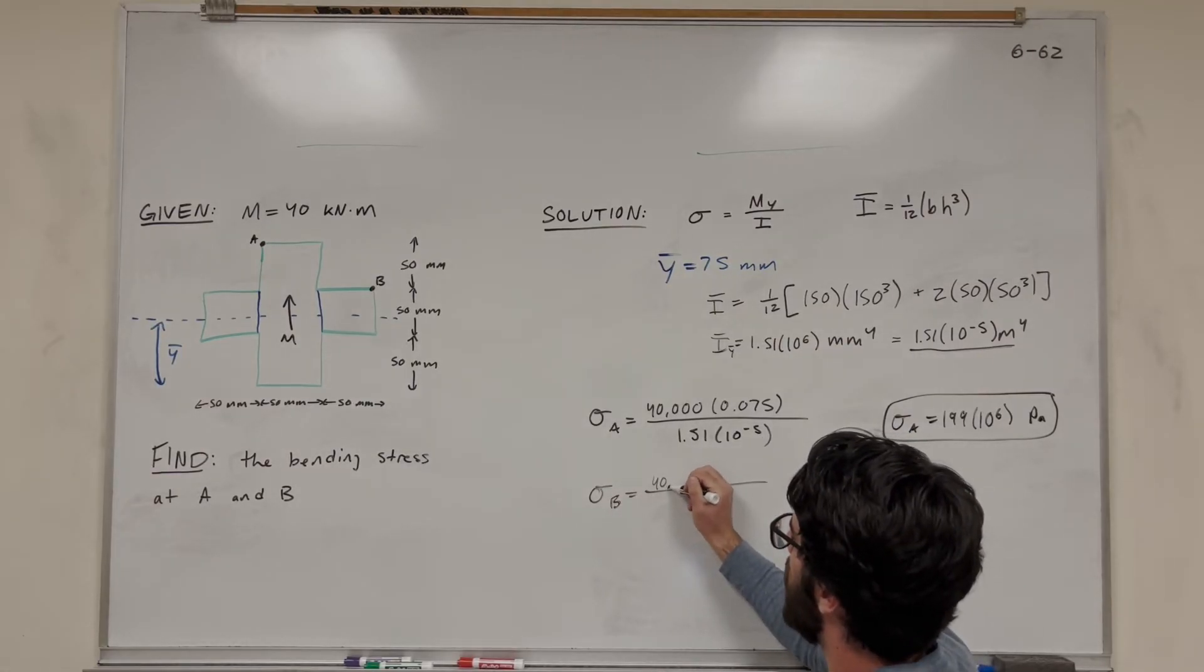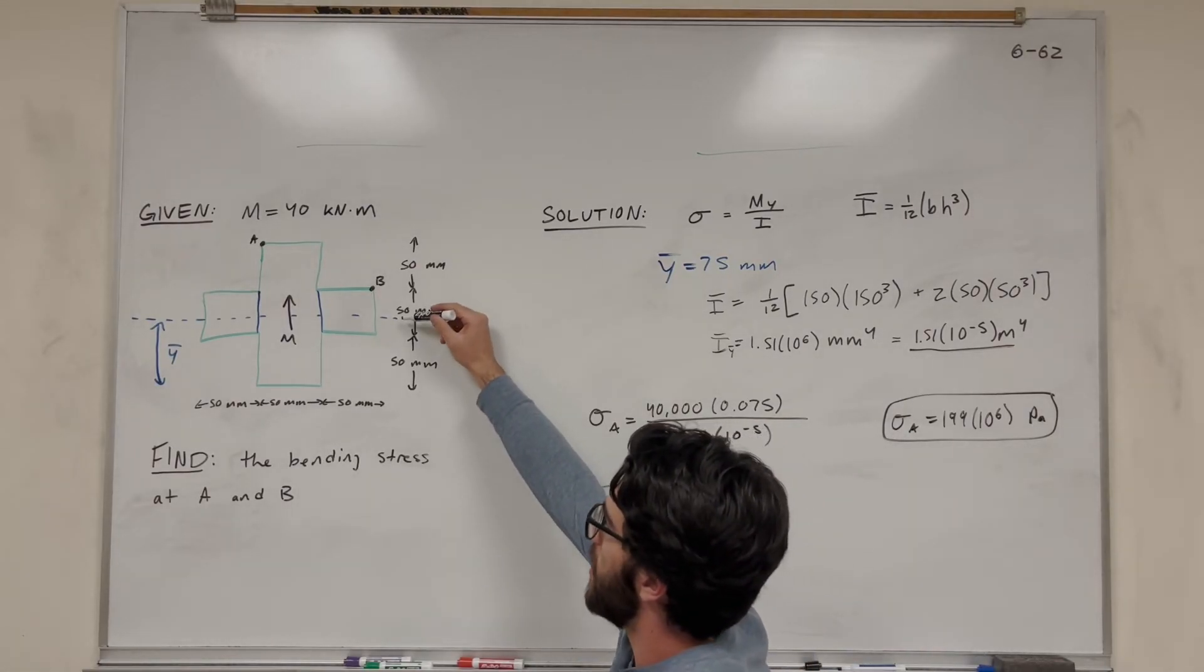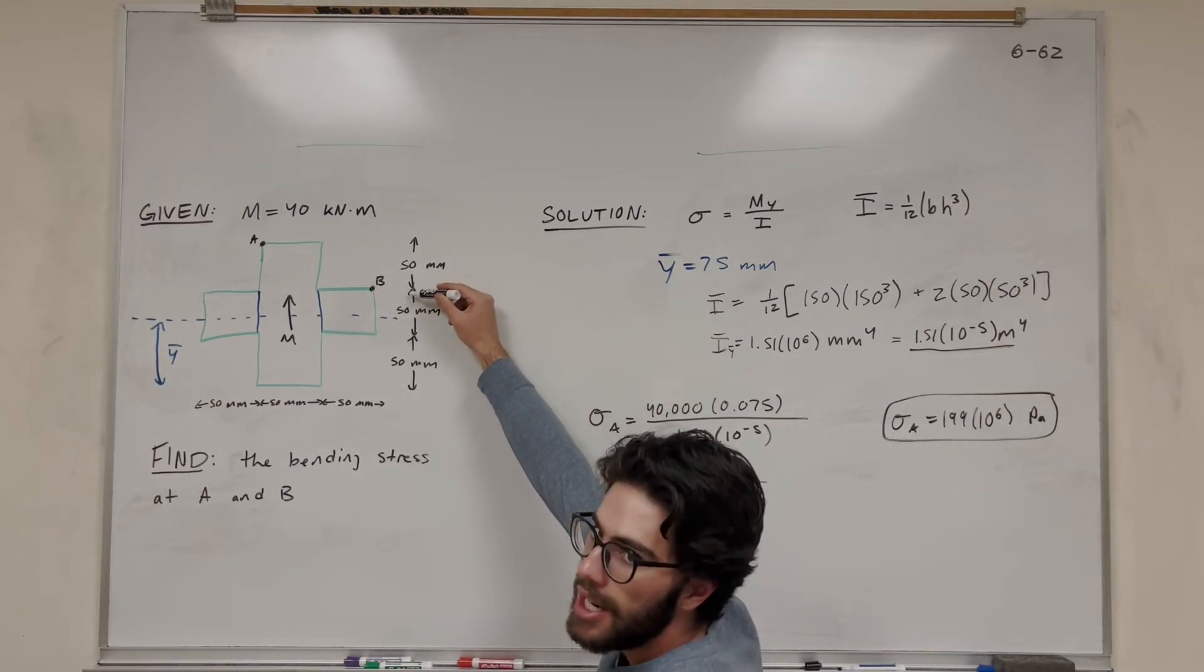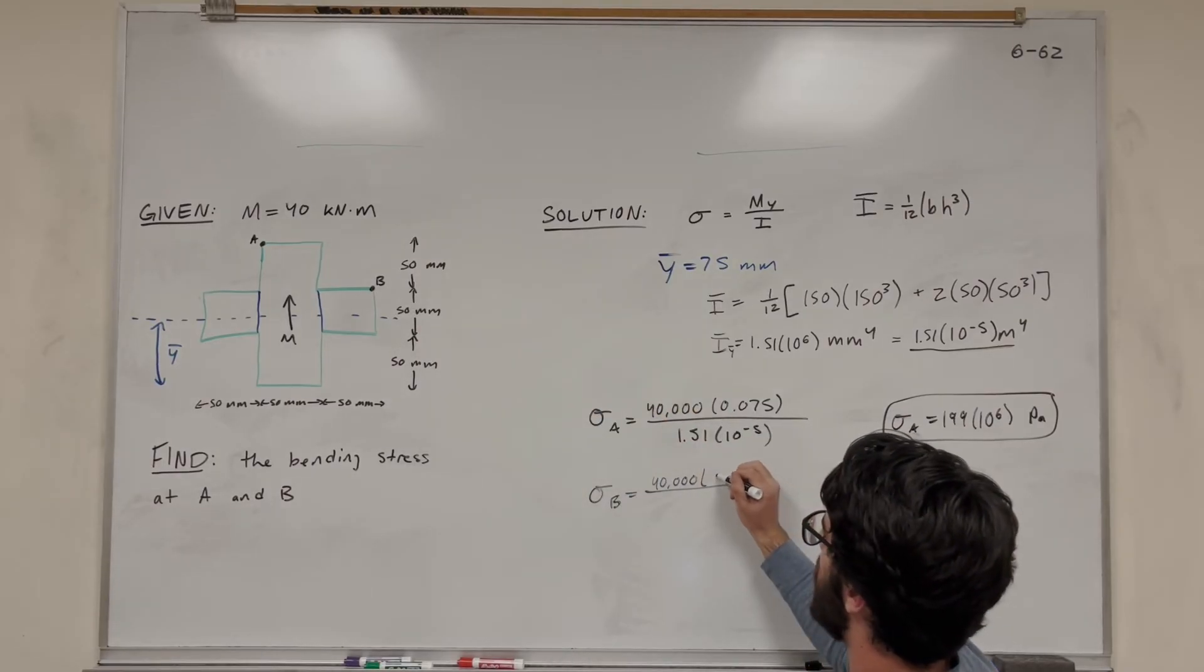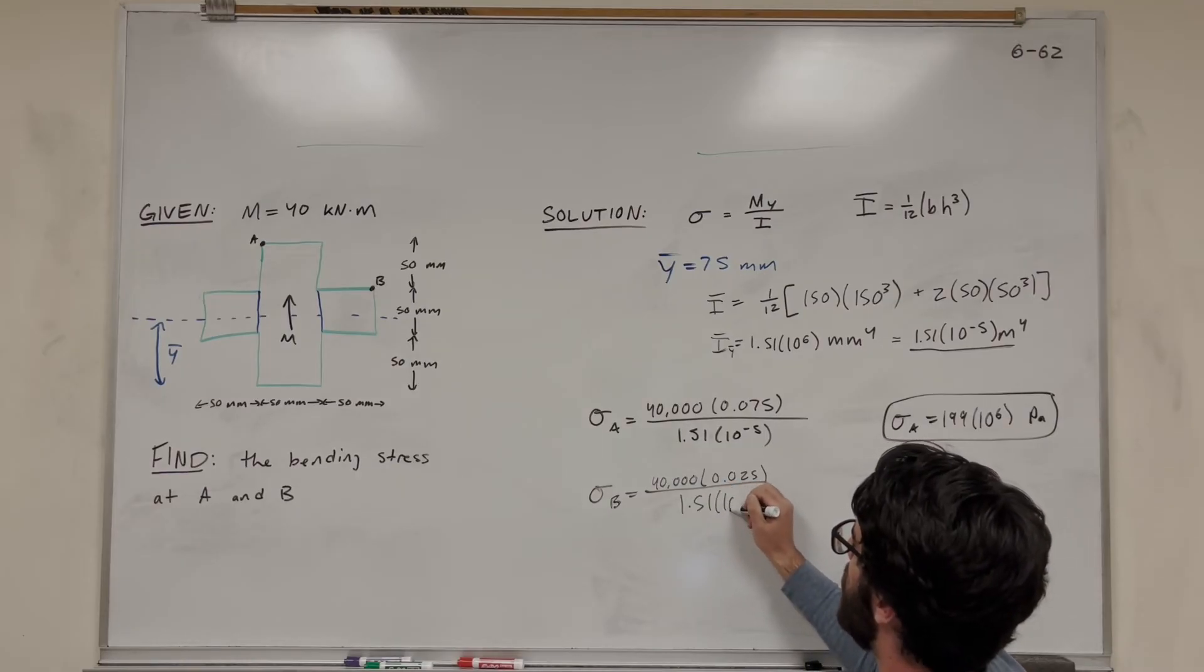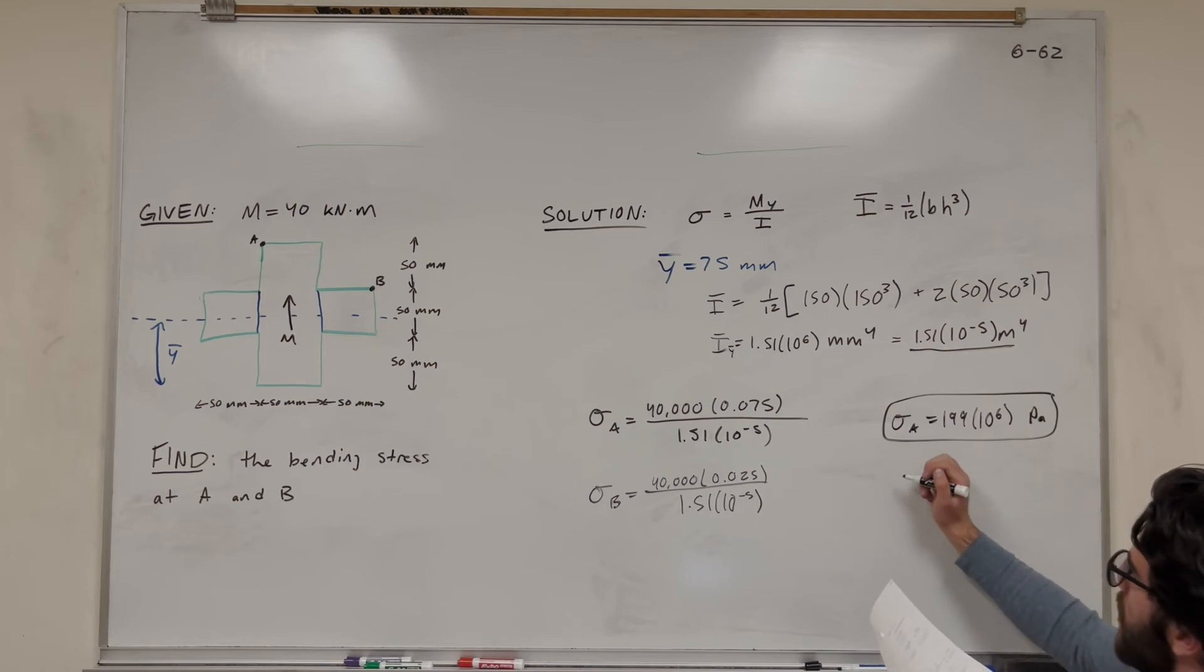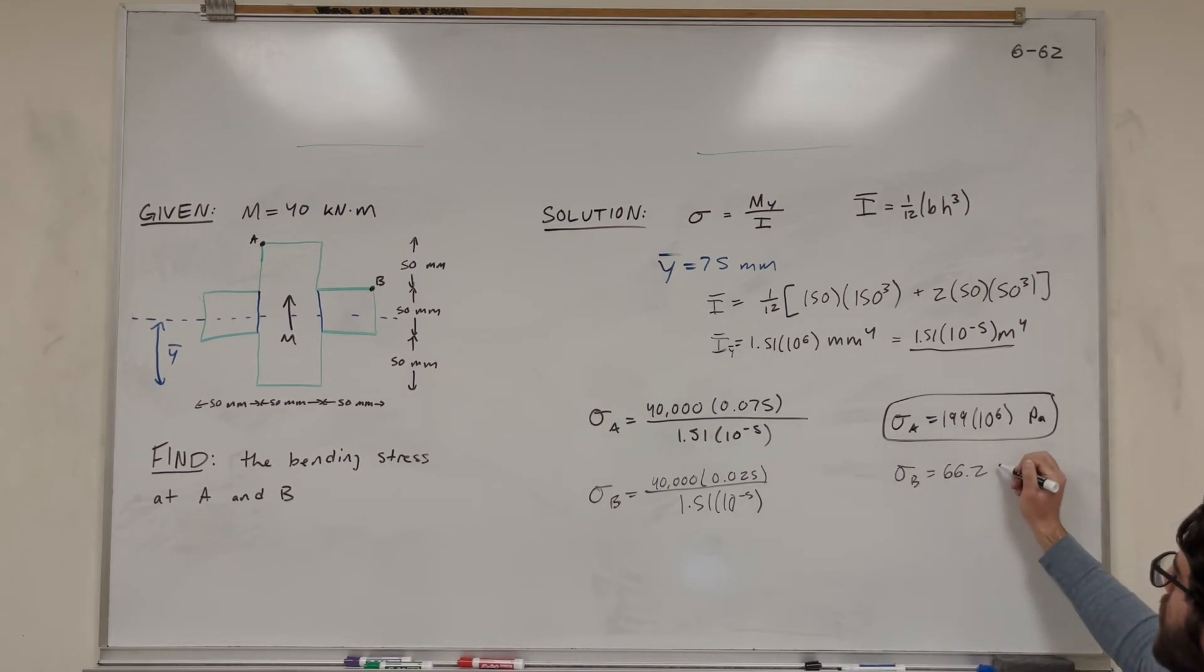Then we can do bending stress at B. We're going to plug in the same moment, 40,000. Now this time the distance to B is less, so the distance to B is from here to here, and that's pretty easy to see. That's 25 millimeters, so 0.025. That's going to be the same moment of inertia, 1.51 times 10 to the negative 5. It's just going to be a third of this number, and we can see that that is exactly that, 66.2 times 10 to the 6th Pascals.